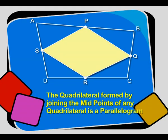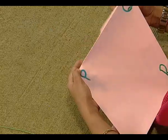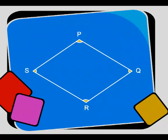Students, we know that a quadrilateral with both pairs of opposite sides equal is a parallelogram. So yes, thus we conclude that by joining the midpoints of the sides of any quadrilateral, we obtain a parallelogram. In this case, we had taken ABCD as any general quadrilateral.